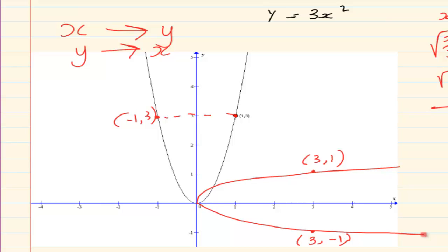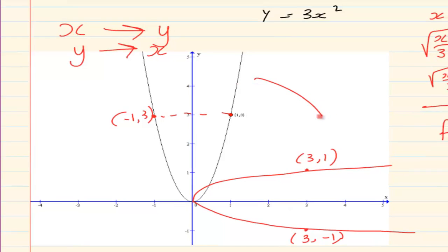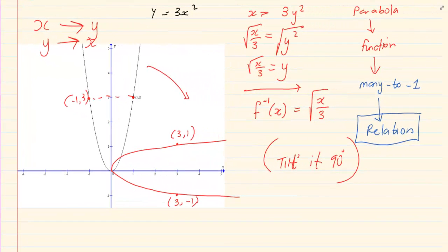When you draw it, you can see it looks exactly like the original graph but tilted 90 degrees. For me that is the best way to remember the drawing — it literally turns like a clock 90 degrees. That is the easiest way to remember an inverse.